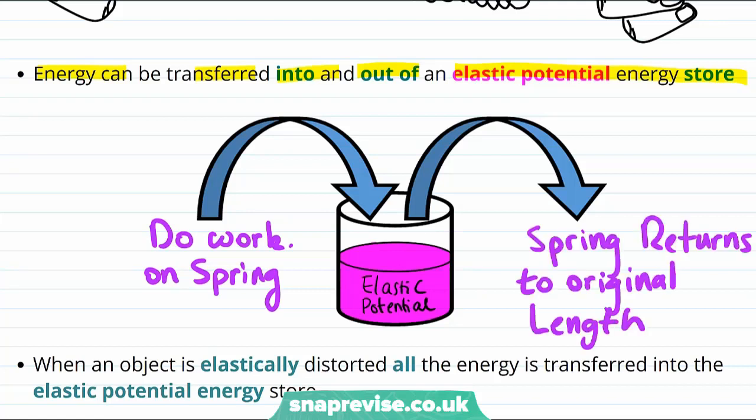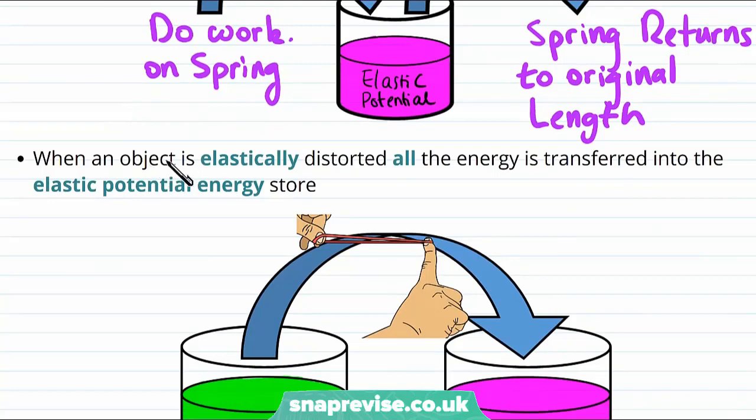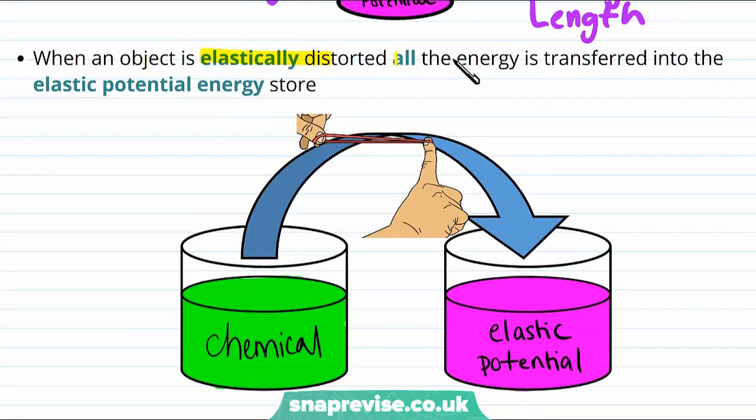Now you might well ask, does any of the energy that we put in when we do work go anywhere else? Well, when an object is elastically distorted, the answer is no. All of the energy is transferred into the elastic potential energy store.